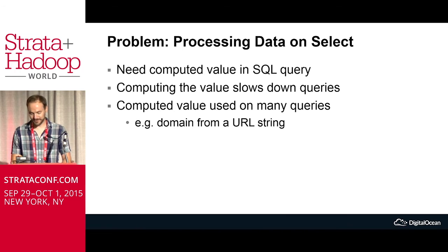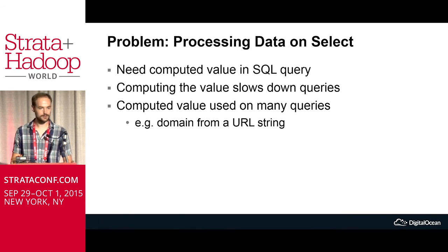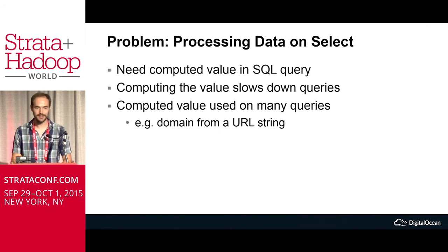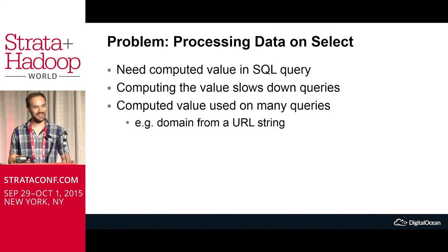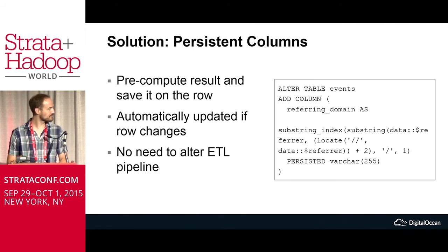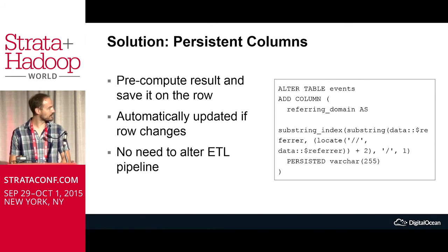After we had our clickstream data in, we noticed some queries the marketing team is writing are going rather slow. There's a select statement doing lots of counts on the referring domain, but we don't have a referring domain as part of the JSON data — we have a referring URL. In the select statement there's logic on logic of string subselects parsing out the domain part of the URL, and that's slowing down the query because we're computing it every time we do a select. So we use another MemSQL feature called a persistent column.